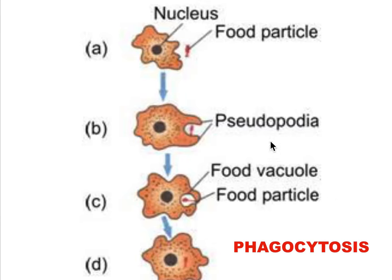Amoeba also acquires its food through this process. It extends its membrane — because the plasma membrane of any animal cell is very flexible, and because of this property it can undergo endocytosis and exocytosis. So it extends its membrane forming pseudopodia, which captures the food particle and engulfs it by forming a food vacuole or vesicle, and the process is called phagocytosis.